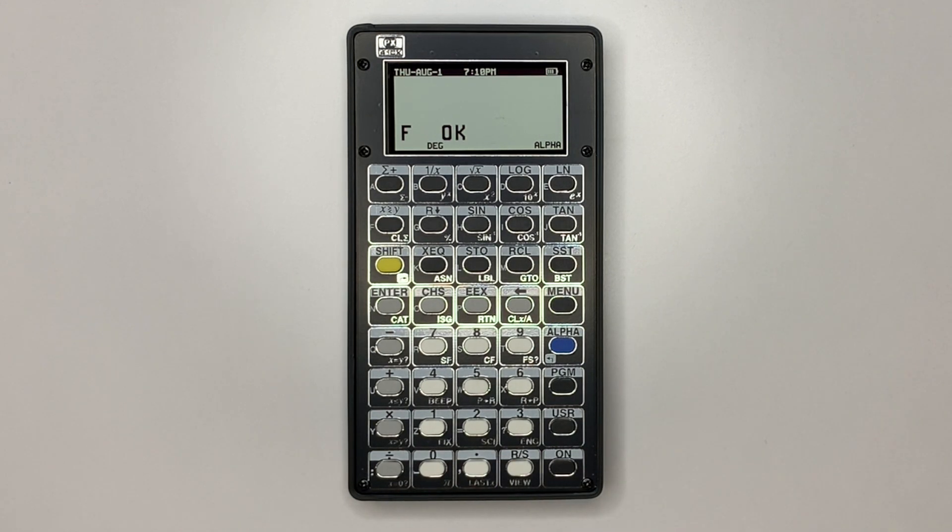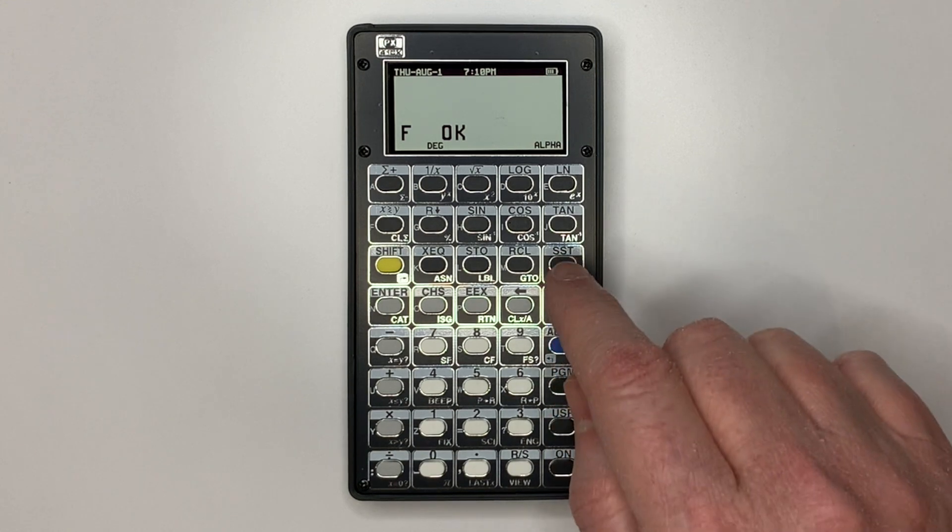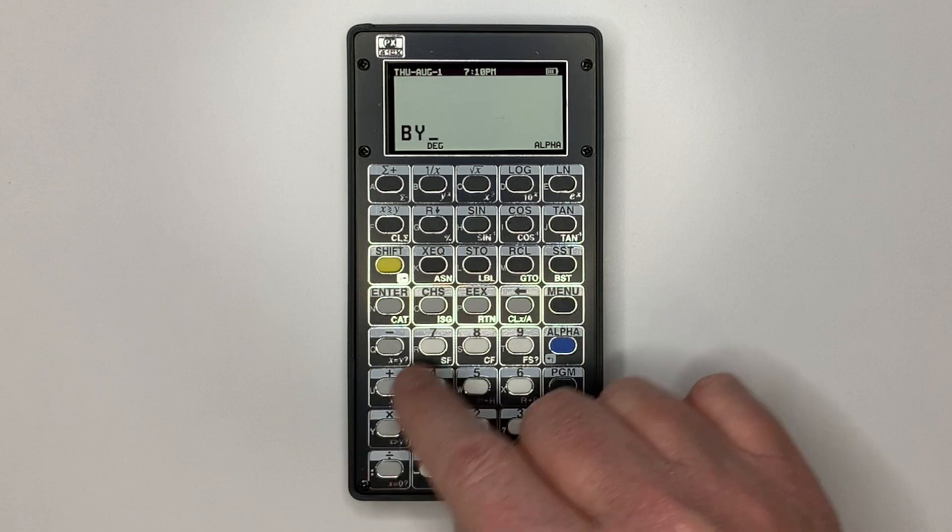I've done another video on Forth on the 41C and DM41X before. Forth is very responsive on the PX41CX like it is on the DM41X, whereas on the original 41C it's very sluggish. We can exit Forth.